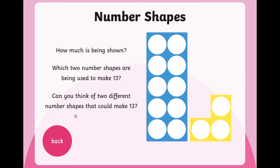Here are our numicon shapes again. The number 13 is built with a 10 and a 3. But there are different ways you can use numicon to make the number 13. It's always great to start with a 10 and 3 — that's the easiest way — but there are other ways. Can you think of any? Maybe later on you could have a go.